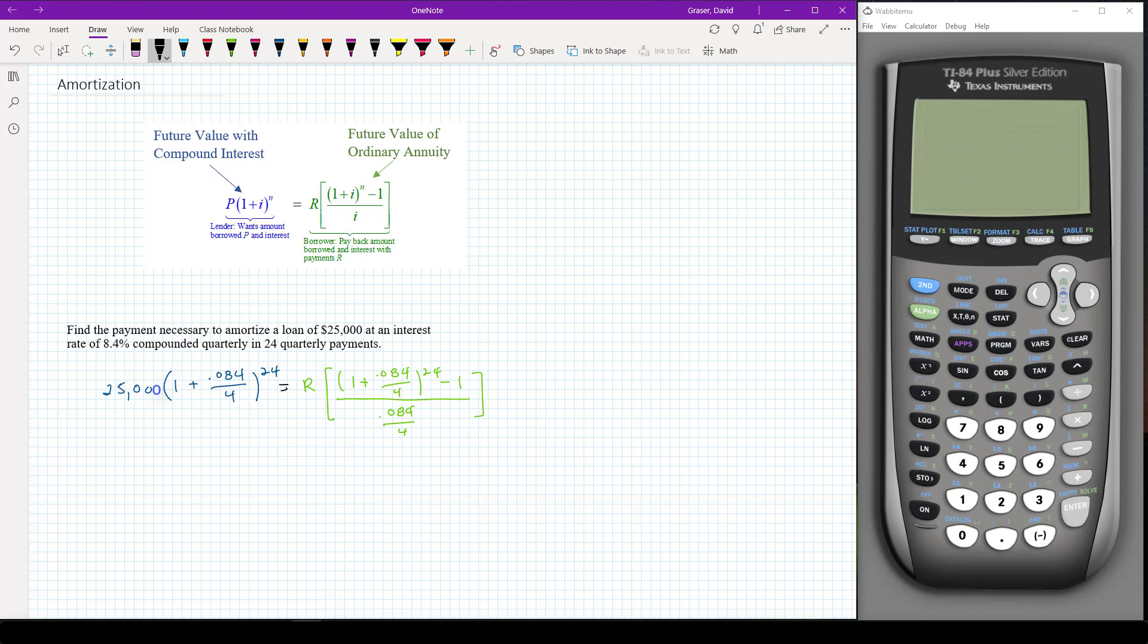So the way I'm going to do this is I'm going to work out the part in blue on my calculator, I'm going to work out the part in green in the brackets, I'm going to write those things down and then I'm going to go ahead and divide to get the R.